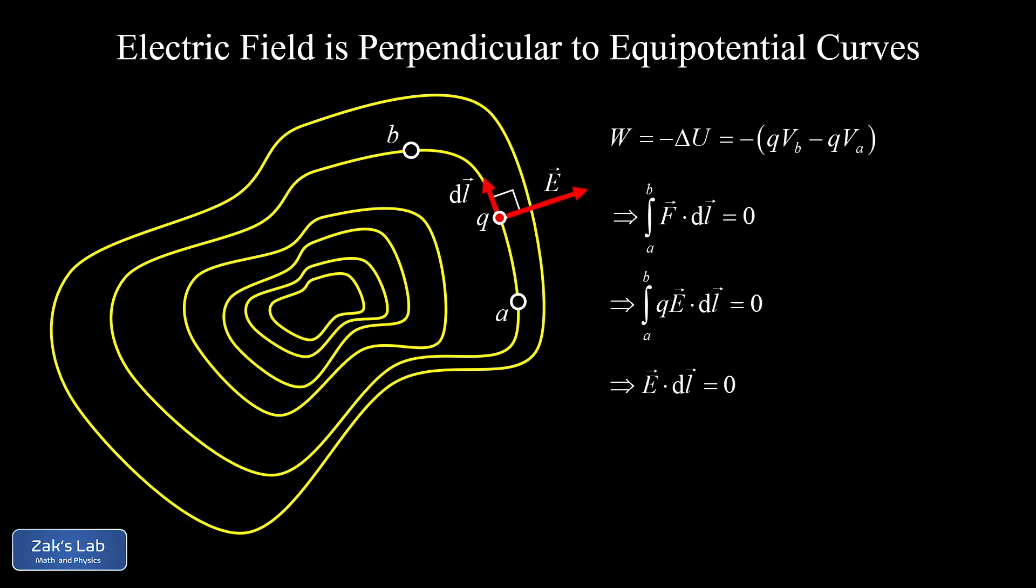Now this meshes nicely with the previous video in which we derived a formula for computing electric field from the potential function. Remember what we discovered there is that the electric field can be computed as the negative gradient of the potential function. And I pointed out in that video that the negative of the gradient of the potential has the direction of steepest descent of the potential function.